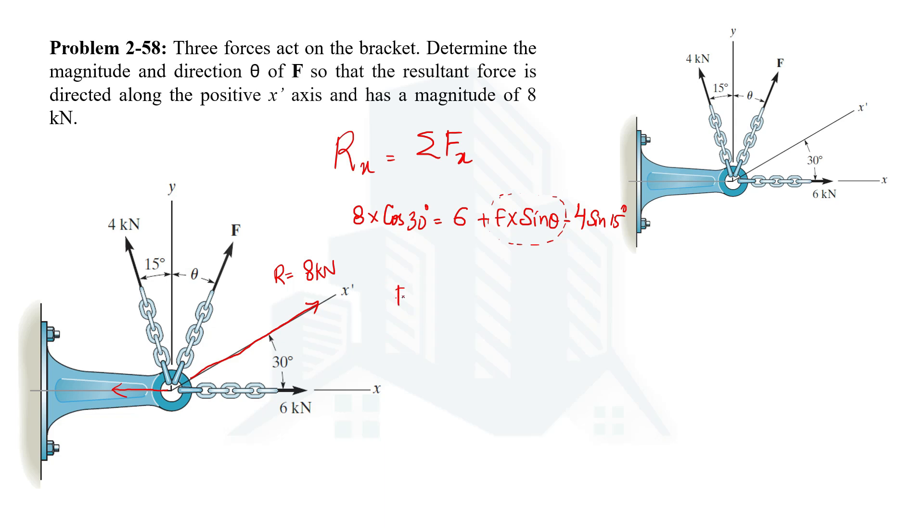Keeping F sine theta on one side and taking all others on the other side of this equation, and on doing simplification we are going to get the value of 1.9635. Let's say this is equation number one.